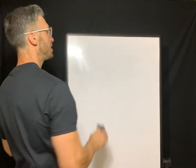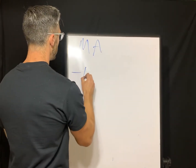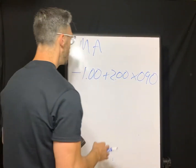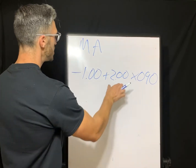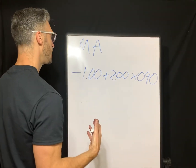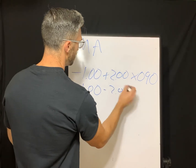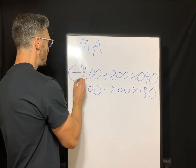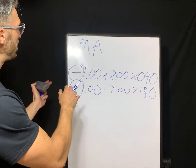Lastly, mixed astigmatism — as you'd guess, it's when one sphere power after transposition is plus and one is minus. Example: negative one, plus two, axis 90. When we transpose, we add plus two and minus one: numerically, minus one plus two equals plus one. Drop this down to minus two, axis 180. Comparing the two sphere signs — minus one and plus one — that's mixed astigmatism.